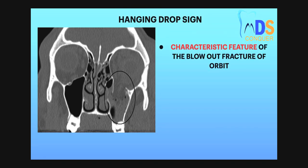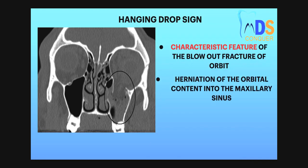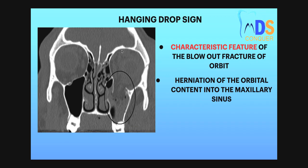This picture is a CT scan coronal section showing the hanging drop sign, which is a characteristic feature of the blowout fracture of the orbit. There is a communication between the orbit and the maxillary sinus. The orbital contents are herniating down and the radiolucency of the maxillary sinus is lost.